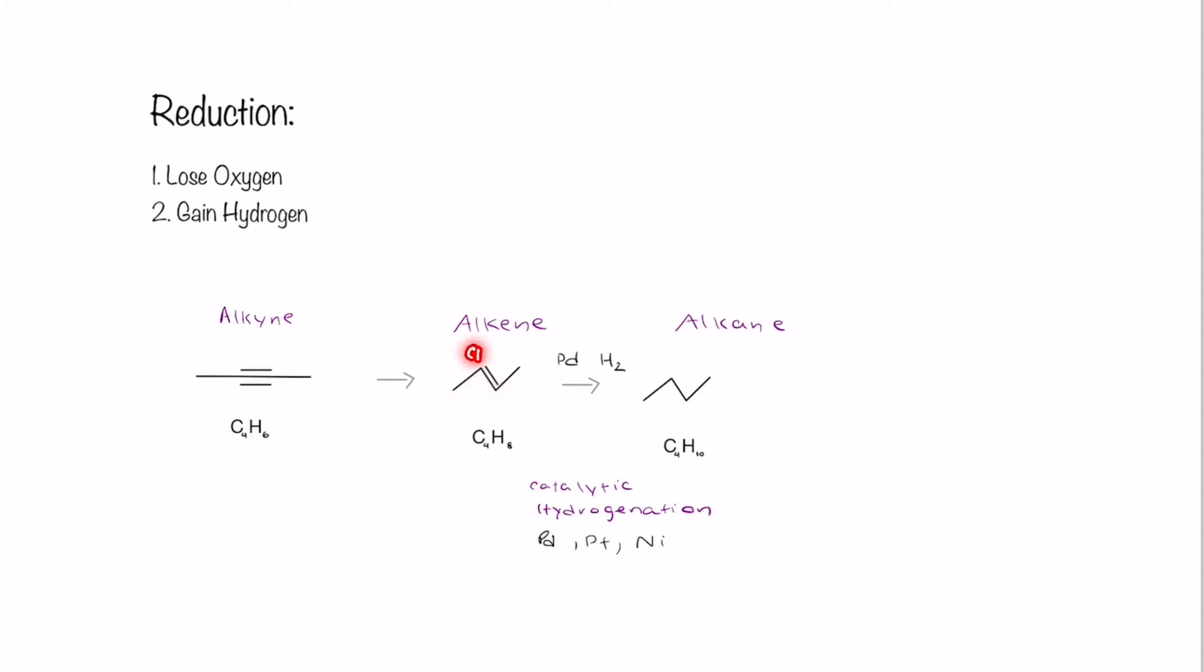So originally, these carbons in the middle were CHCH, but now they're going to become CH2CH2. And that's because they have an influx of hydrogens coming in from this reagent. And so we call this catalytic hydrogenation.